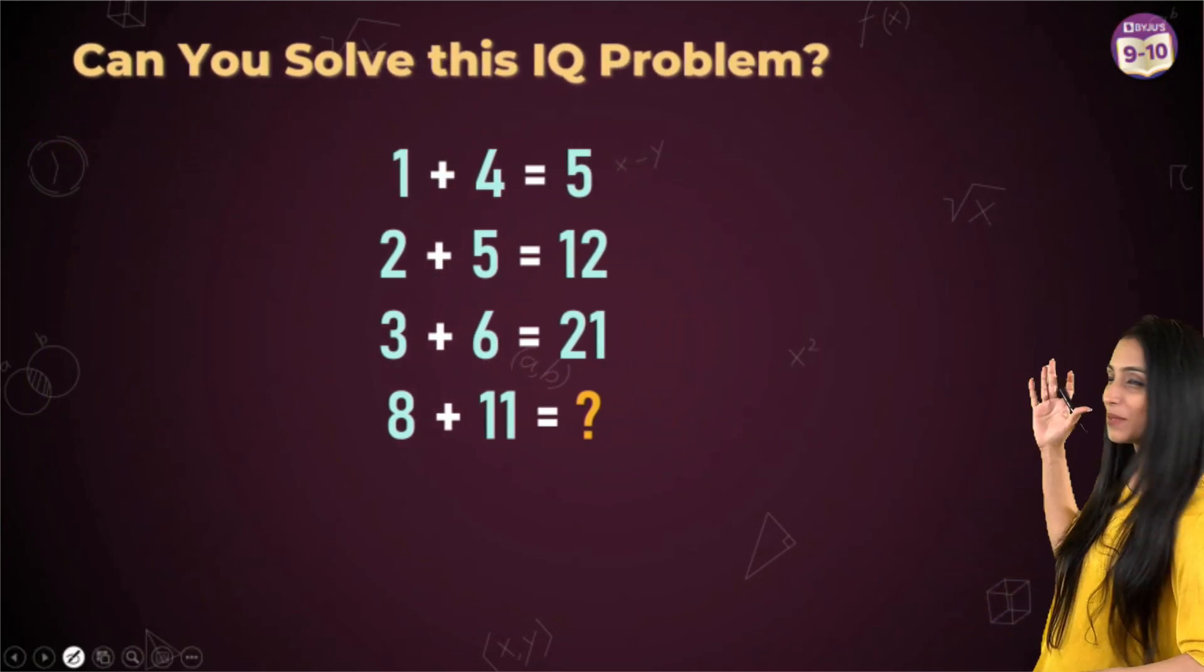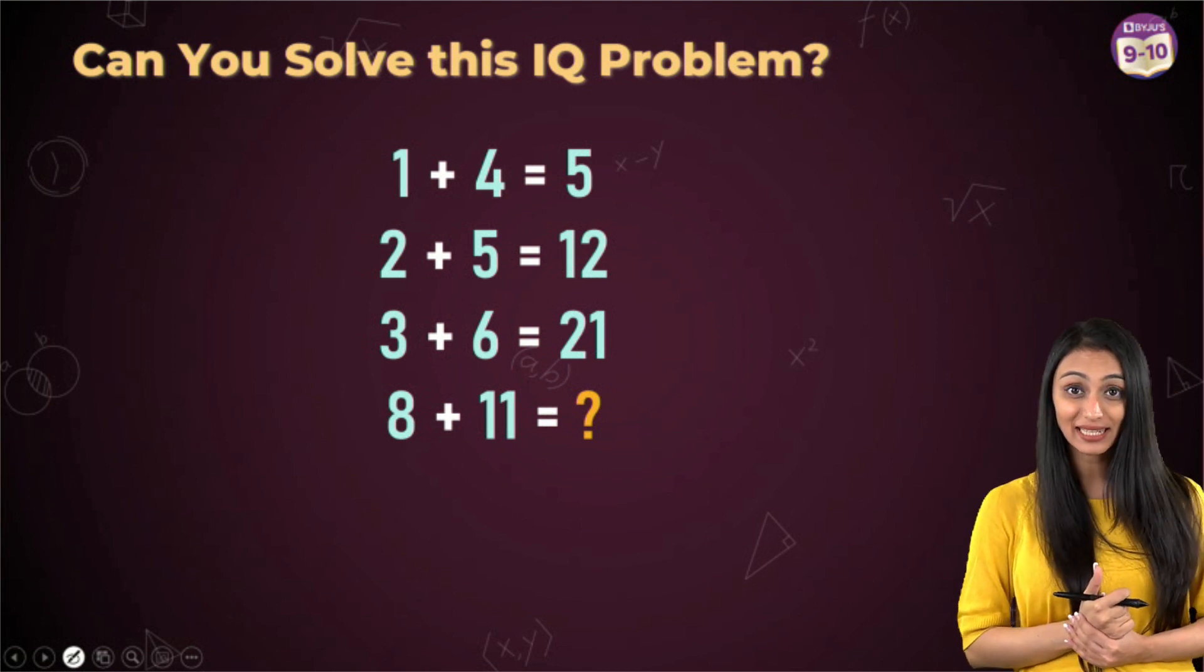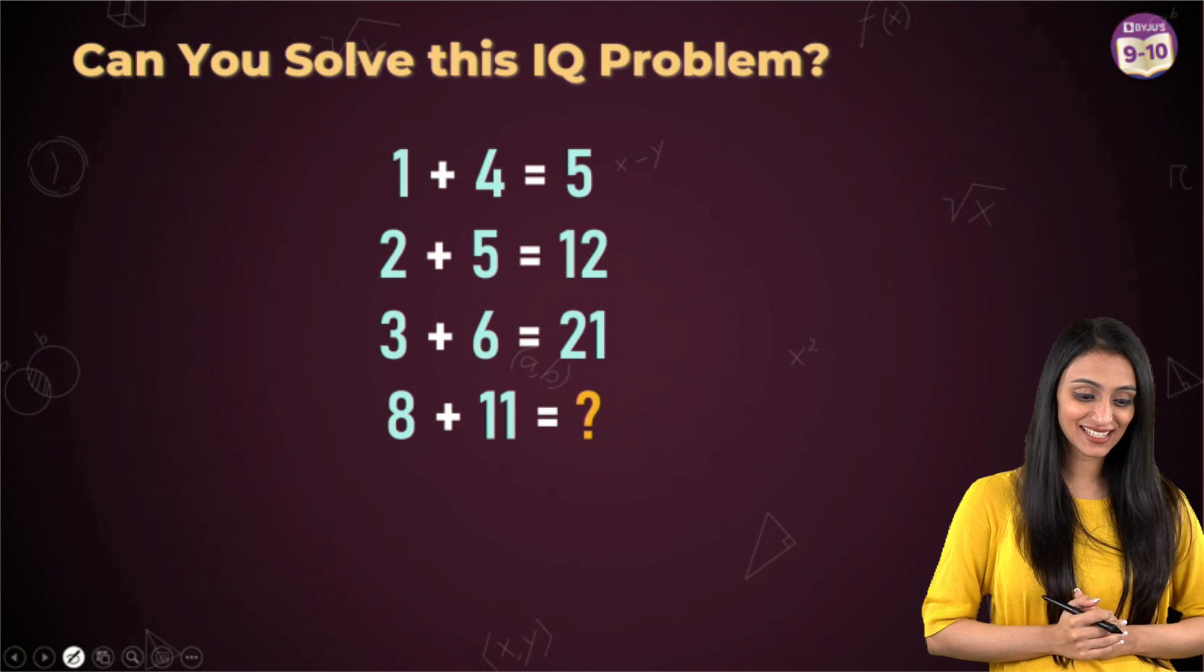Take a look at this. So 1 plus 4 is 5, 2 plus 5 is 12, 3 plus 6 is 21, 8 plus 11 is going to be what? This is something interesting, isn't it?